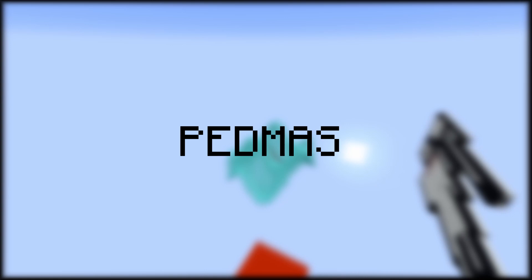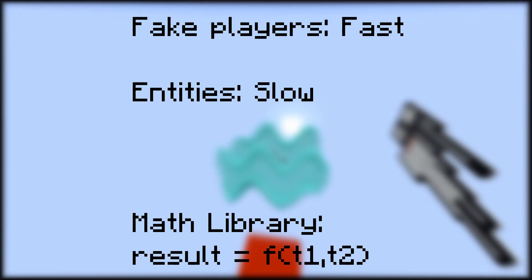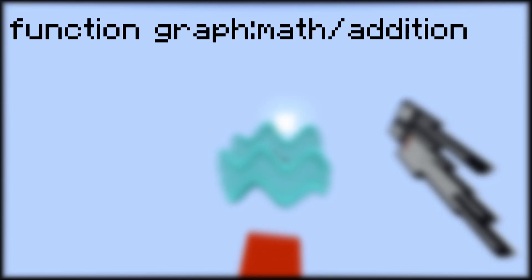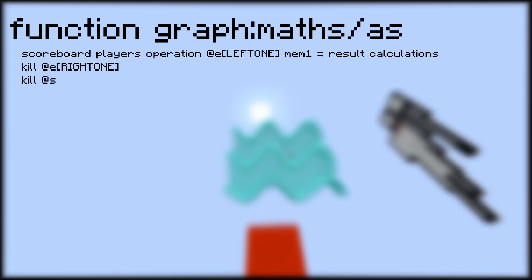Division and multiplication have the same priority as well as addition and subtraction. So let's look at addition, which takes two values. All functions that take two values use the function math/setmembs to copy the scoreboard values to each constant in the scoreboard objective calculations under the fake players T1 and T2. The reason we do this is because fake players are less expensive to reference, and a math library using T1 and T2 can be made separately. Once the values are set, we call the math library. The function for addition is under math/addition — we set result to T1 and add T2 to result. Then we copy result onto the left area effect cloud, then kill the right and operation area effect cloud. Subtraction works very similarly except T2 is subtracted instead of added.